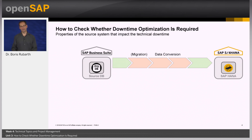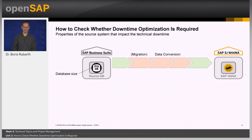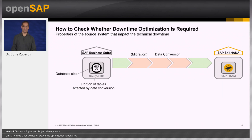Now, properties of the source system. On this slide you see the source system being transferred into an SAP S/4HANA system, with migration in case the source is not yet running on HANA, and the downtime blocks for data conversion. The database size of the source system is an influencing factor — the bigger the source database, the longer the migration and data conversion. But it is not enough to estimate the source database size alone; the portion of tables affected by the new data model is also important for the data conversion part.